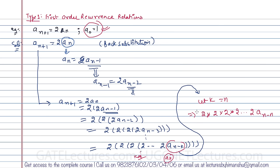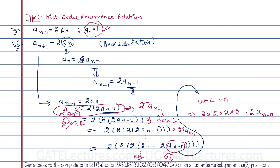Evaluating the powers: at a(n-1) we have 2², at a(n-2) we have 2³, at a(n-k) we have 2^k. With k = n, this becomes 2^n · a(0). Since a(0) = 1, the result is a(n+1) = 2^n. This simple example was easy to solve by back substitution.